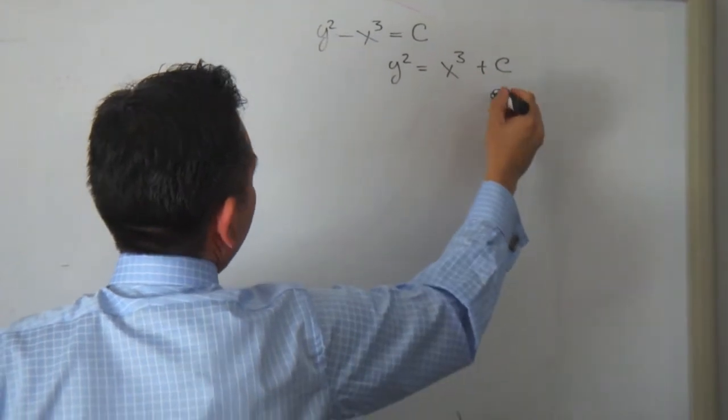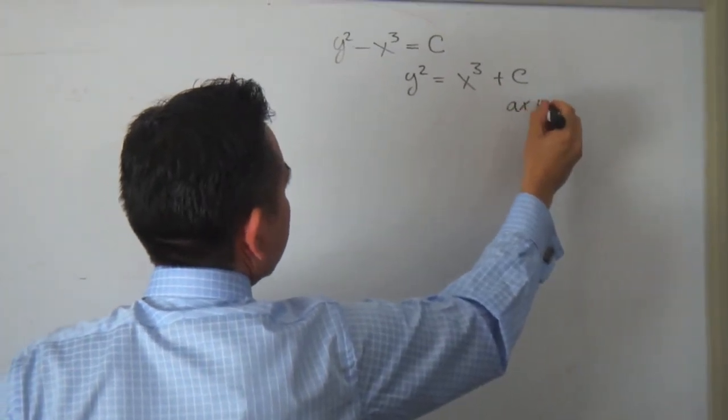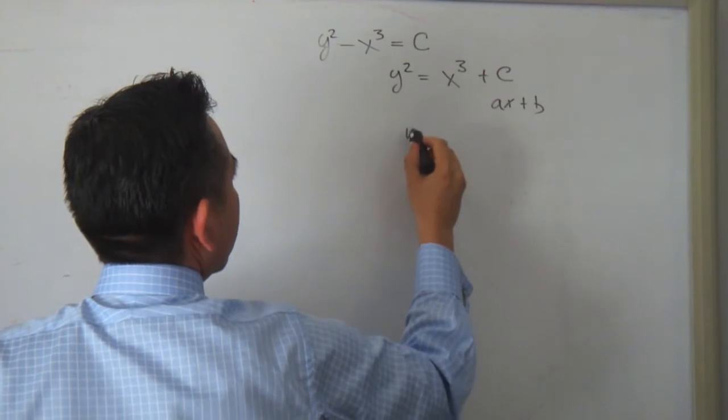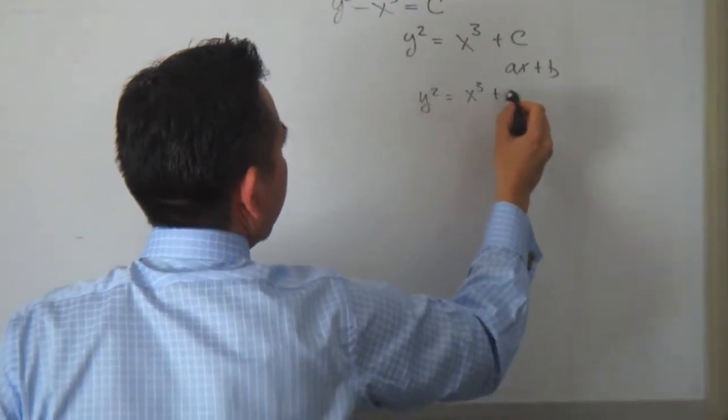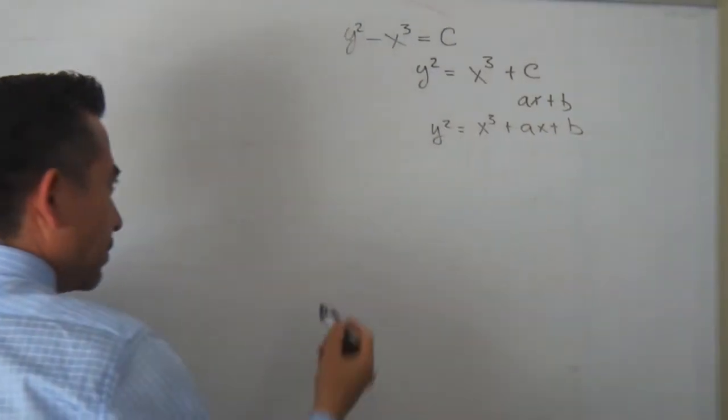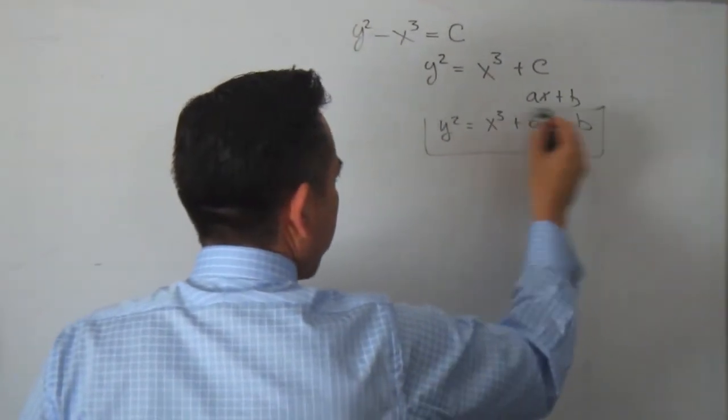Where c probably is a line, x plus b, right? So we can conclude, we maybe have something like plus a, x plus b. Now, Mordell's theorem,